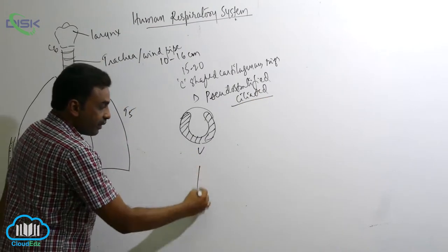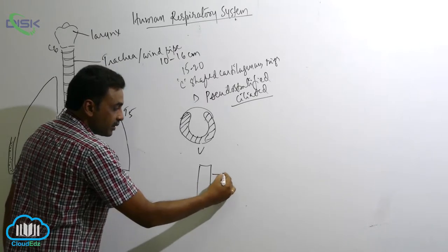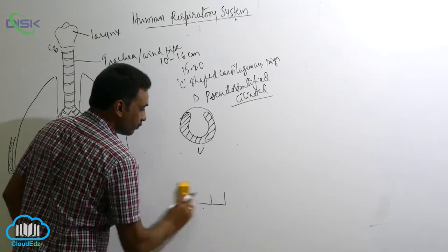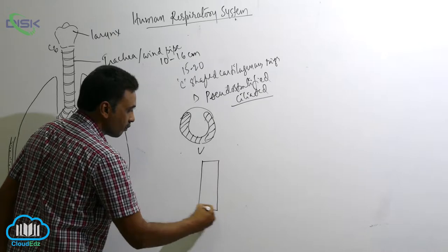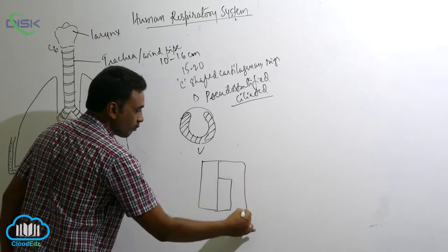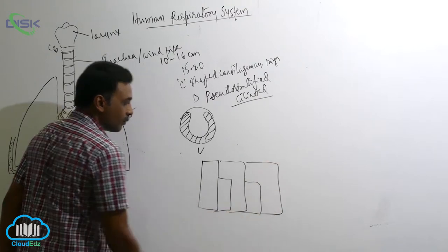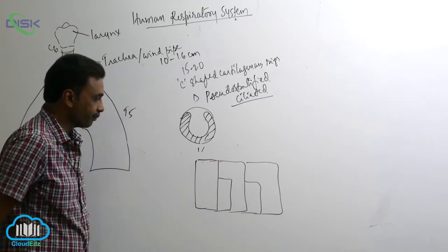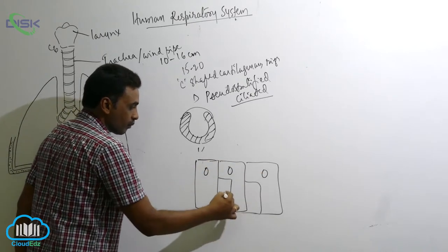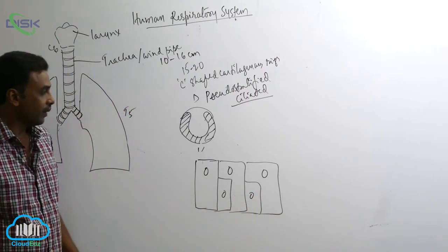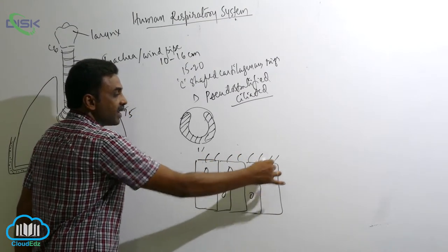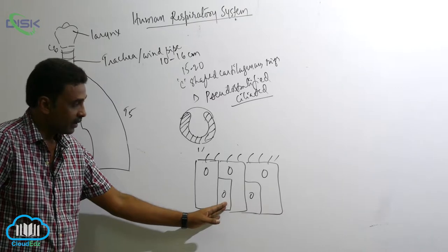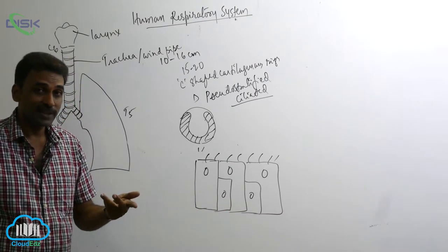A pseudo stratified epithelium - some cells are long, some cells are short. And at the level of the larger cell, this is a pseudo stratified epithelium. Some cells are long, some cells are short. Appears as if the cells are arranged in two layers. But if you see the base,